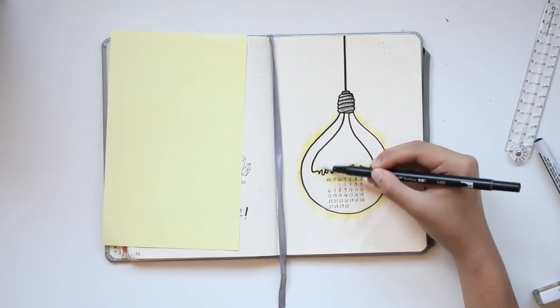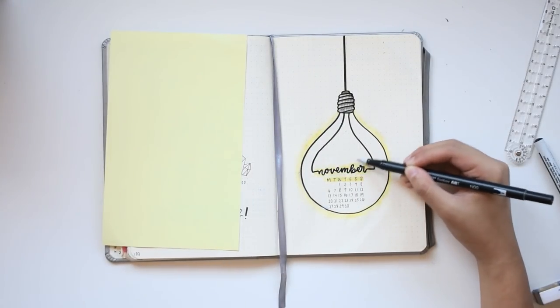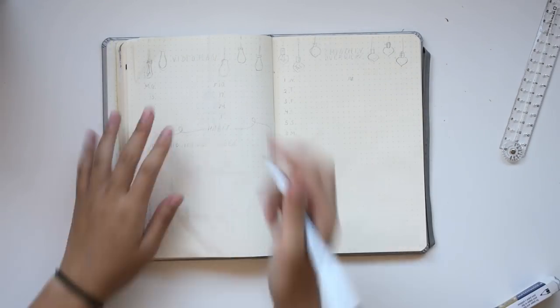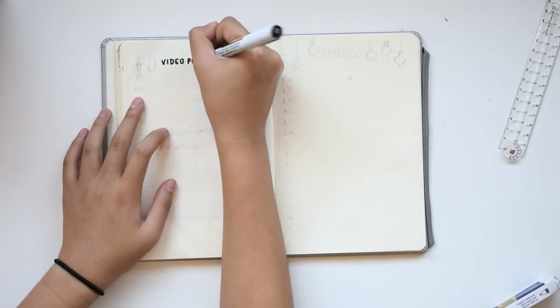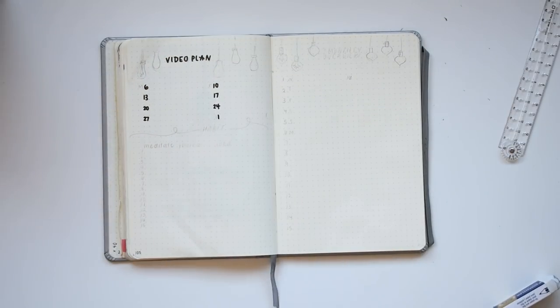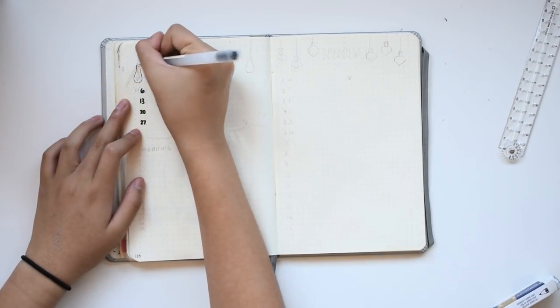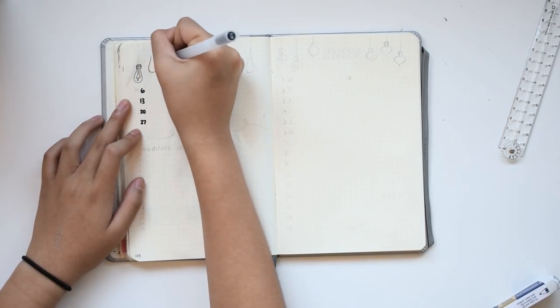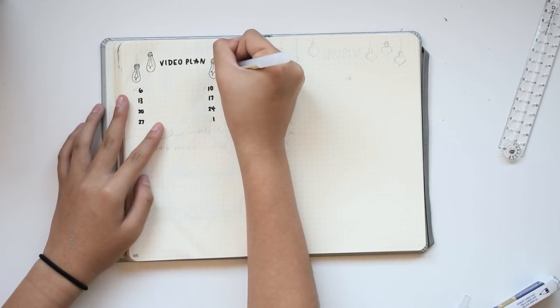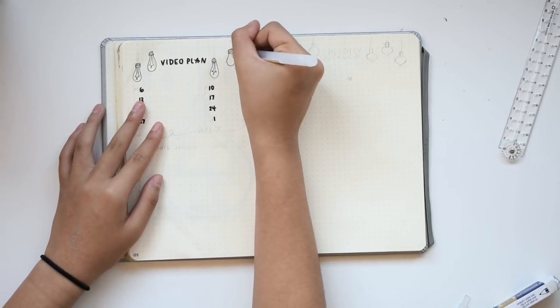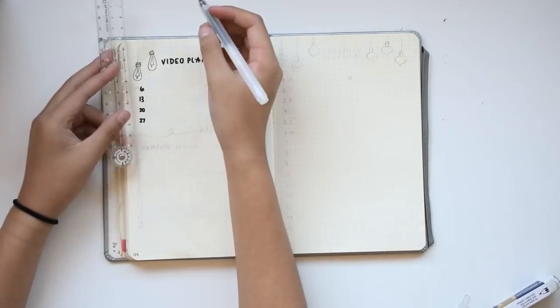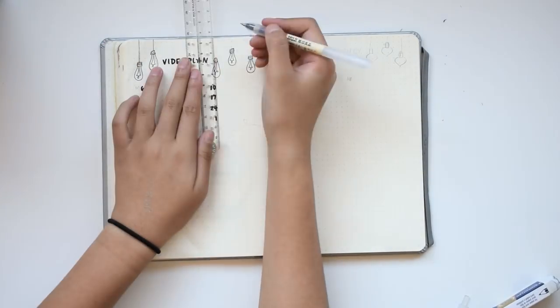I'm doing more blending again with the Tombow dual brush pen. Now on to my monthly trackers, planners, etc. These I've already sketched out beforehand with a pencil, as you can see, and now I'm just tracing them over and finalizing all the little doodles. And by the way, the black pen that I'm using is a Muji gel ink pen in the 0.38 size.